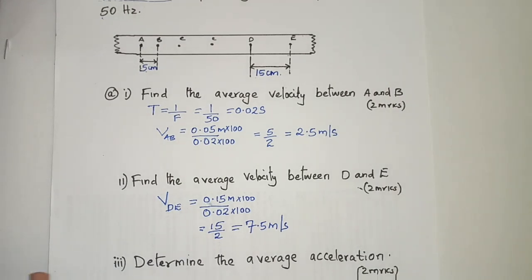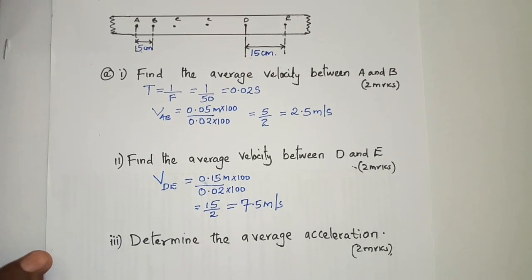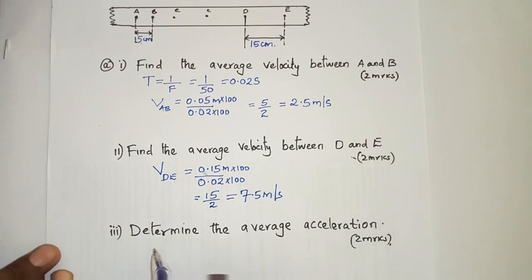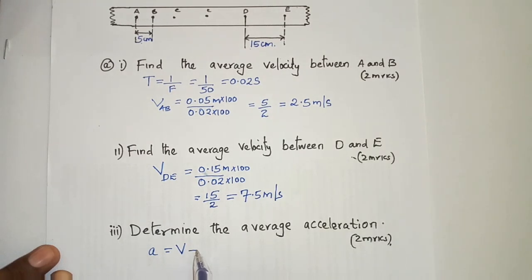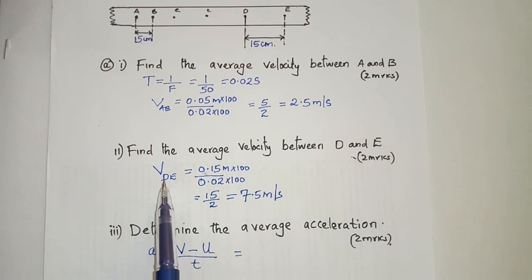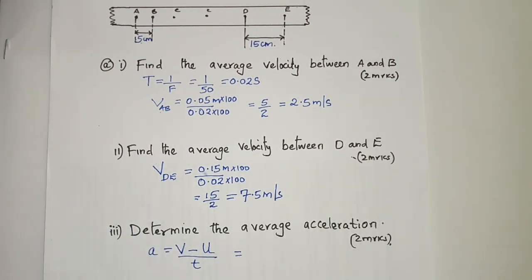Now let us move to the last part of the question, which is asking: find the average acceleration. To get acceleration, we use final velocity minus initial velocity divided by the time taken. The final velocity is the average velocity between D and E, and the initial velocity is the average velocity between A and B.